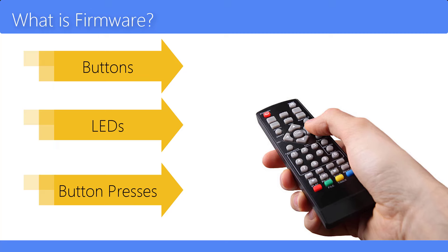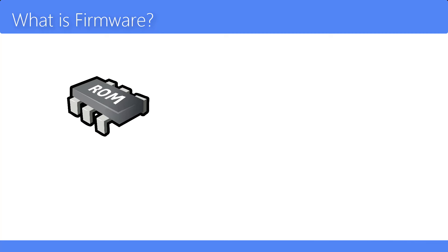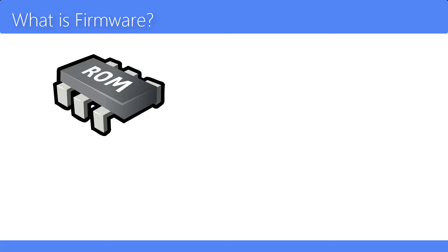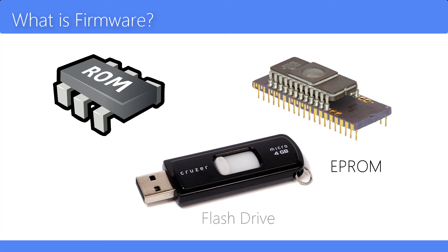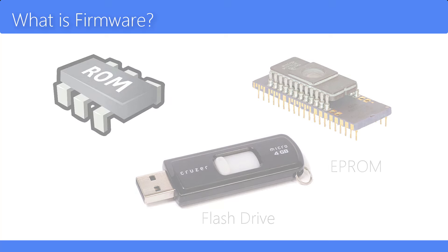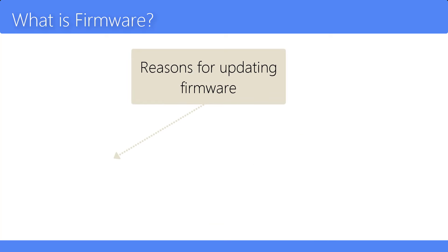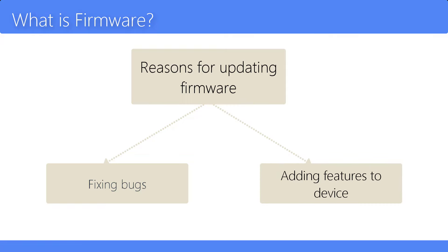Firmware is held in non-volatile memory devices such as ROM, EPROM, or flash memory. Changing the firmware of a device may rarely or never be done during its lifetime. Common reasons for updating firmware include fixing bugs or adding features to the device.